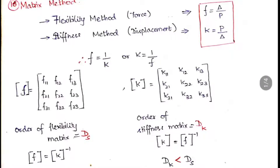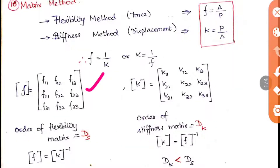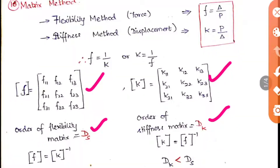The flexibility matrix is denoted as F and the stiffness matrix as K. The order of the flexibility matrix equals DS and the order of the stiffness matrix equals DK. When solving a beam problem, you calculate both DS and DK values and choose the method that gives a smaller matrix order for easier calculation — for example, if DS equals 2 and DK equals 4, prefer the flexibility method.